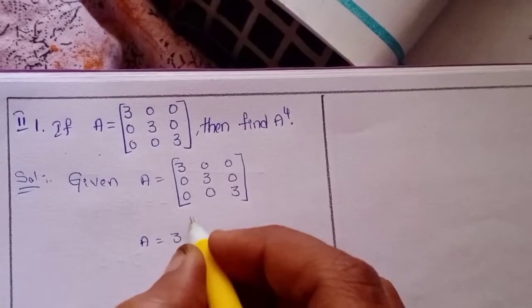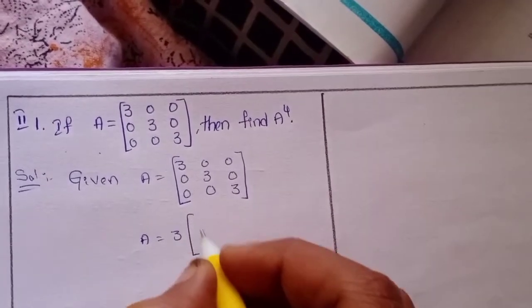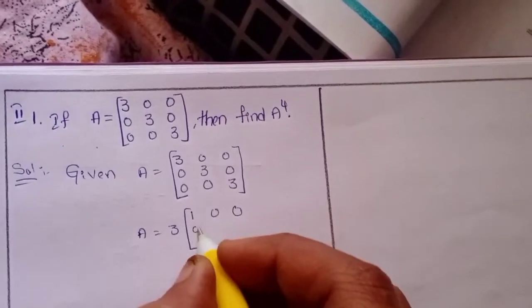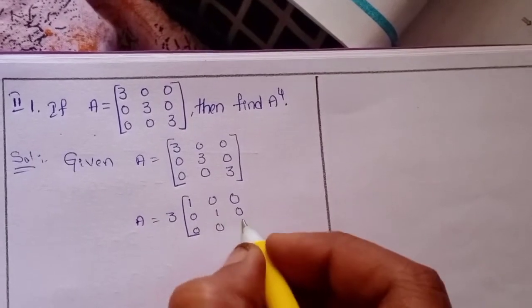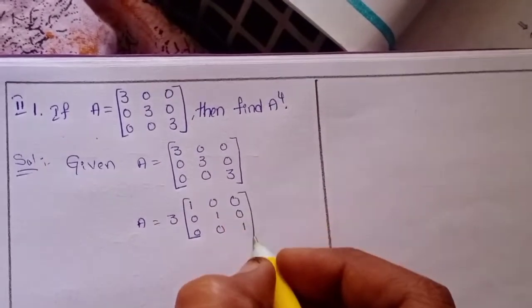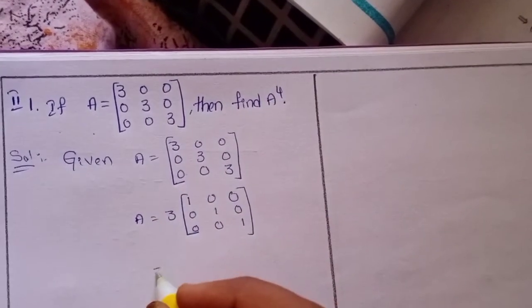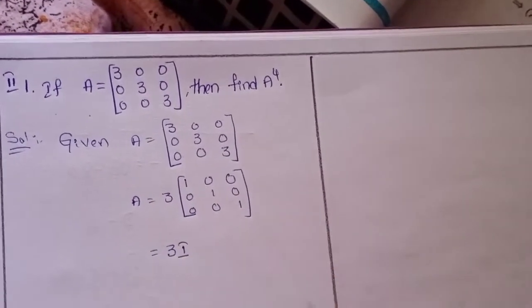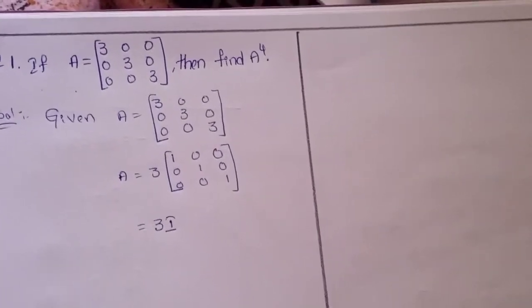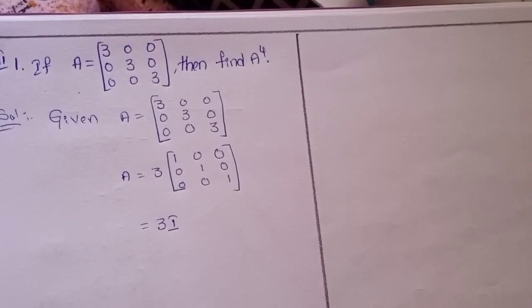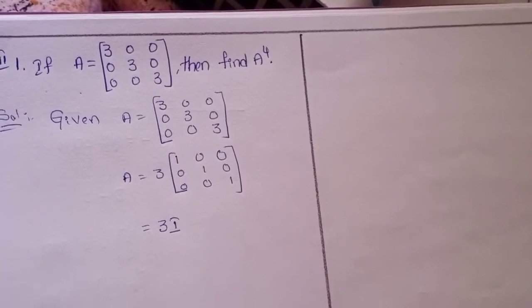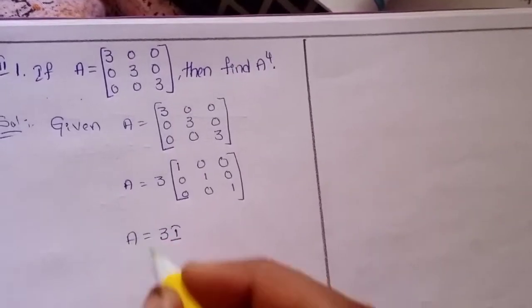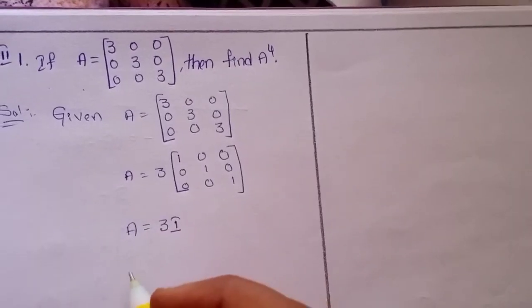Take out common factor 3, giving us [1,0,0 / 0,1,0 / 0,0,1], which is 3 times the identity matrix of order 3. So A equals 3I.